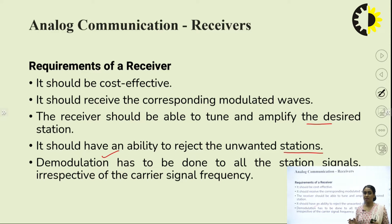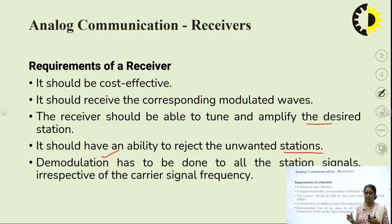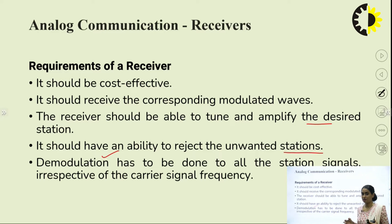For an amplitude modulated wave, demodulation must take place. For conventional AM, an envelope detector must be present to act as the demodulator. For DSB-SC, SSB, or VSB, a corresponding coherent receiver must be present — one famous example being the Costas receiver. The complete receiver consists of the demodulator as just one part of it; the demodulator is not the complete receiver.